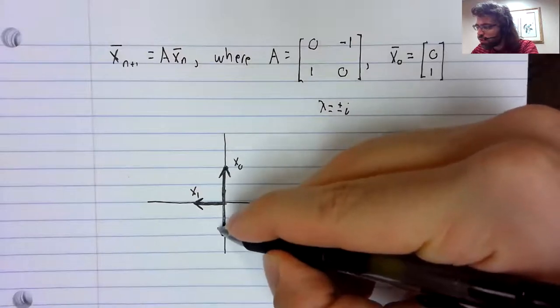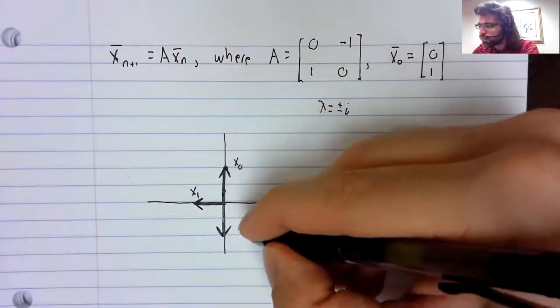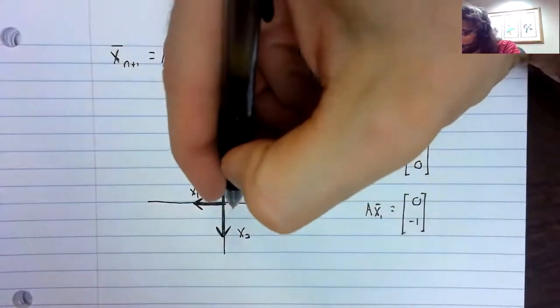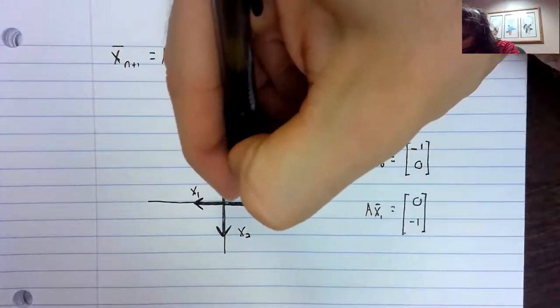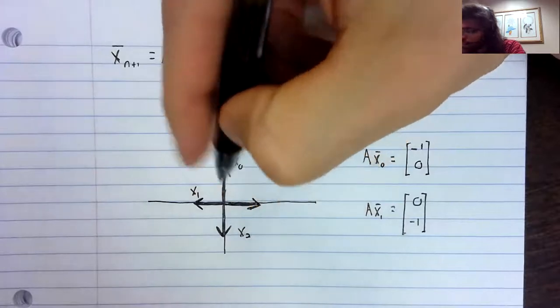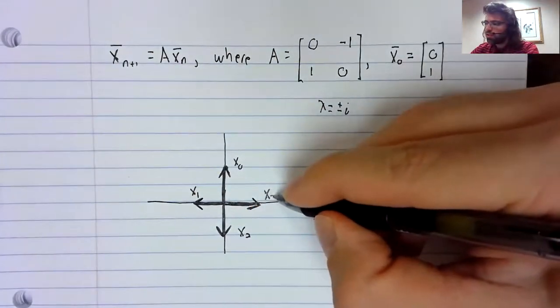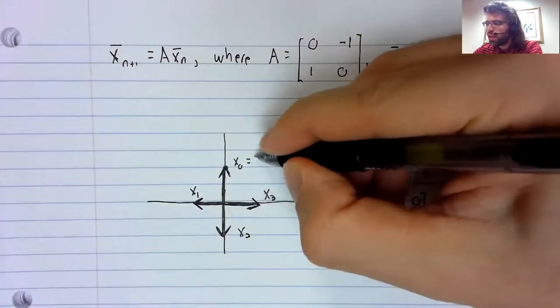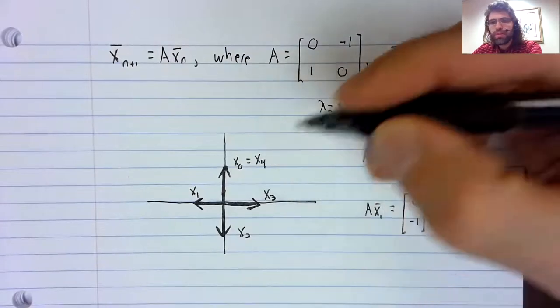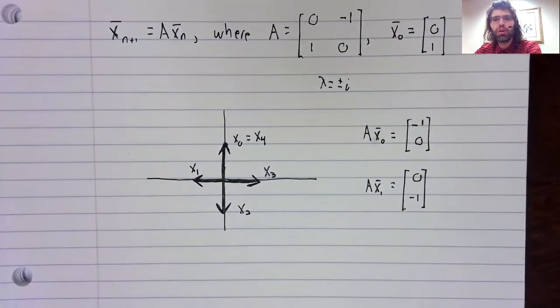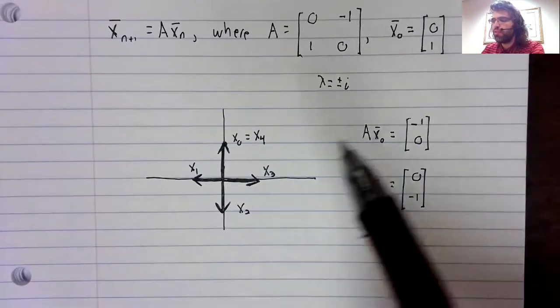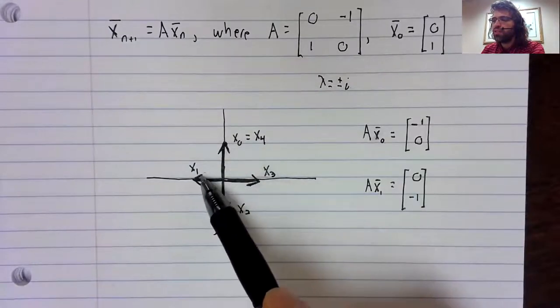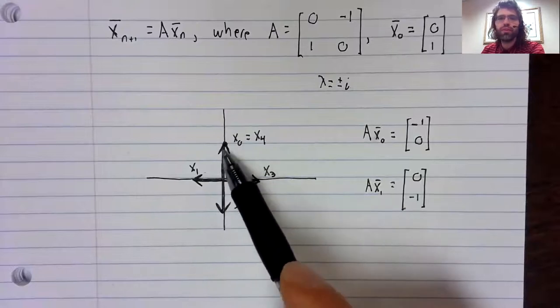So X₂ is there. Multiply by A again. X₃ is here. Multiply by A again. And then we find that actually X₀ equals X₄, and we'll just keep switching between these states as n goes to infinity.